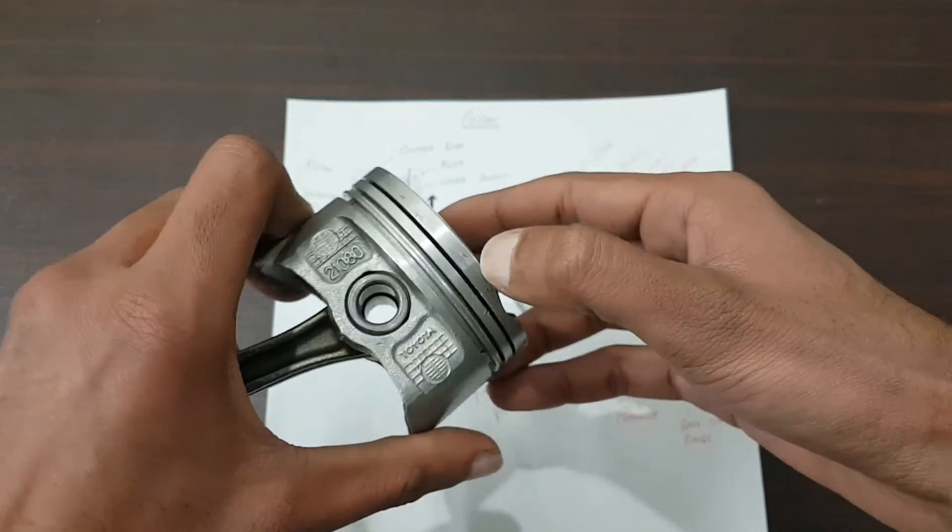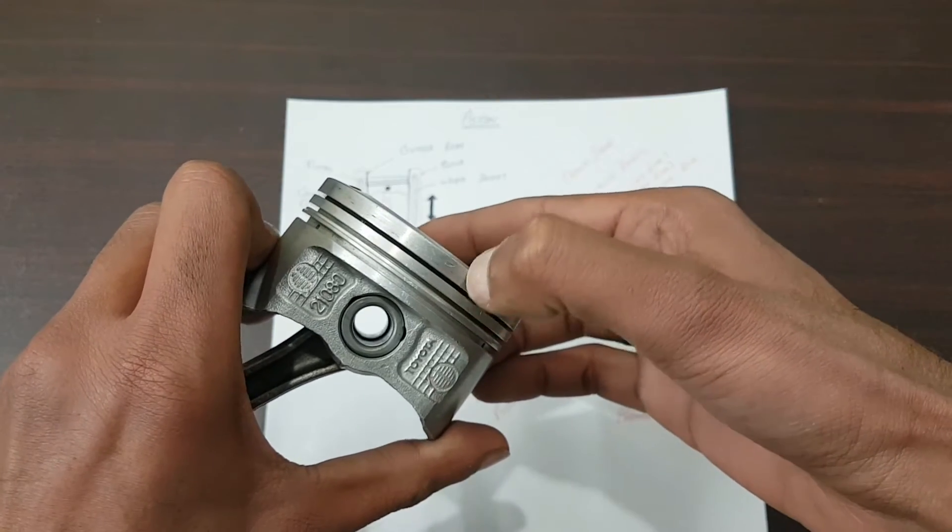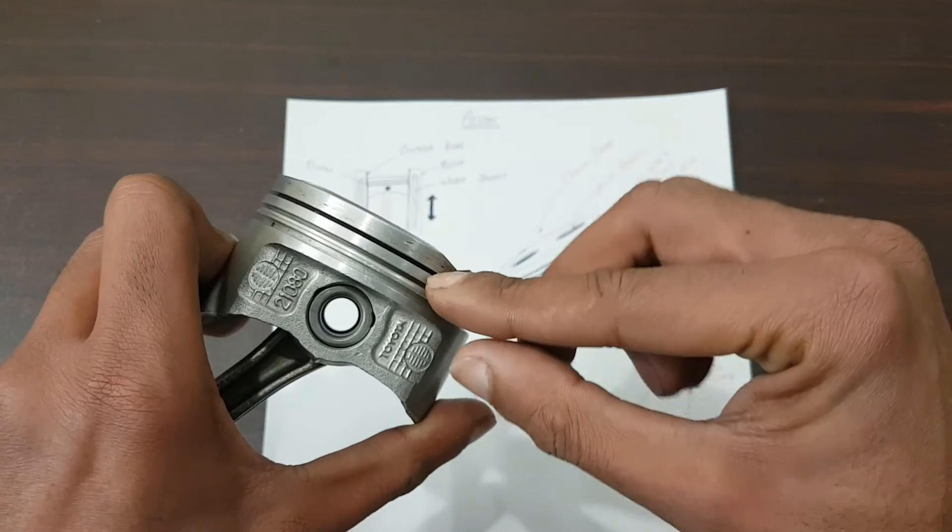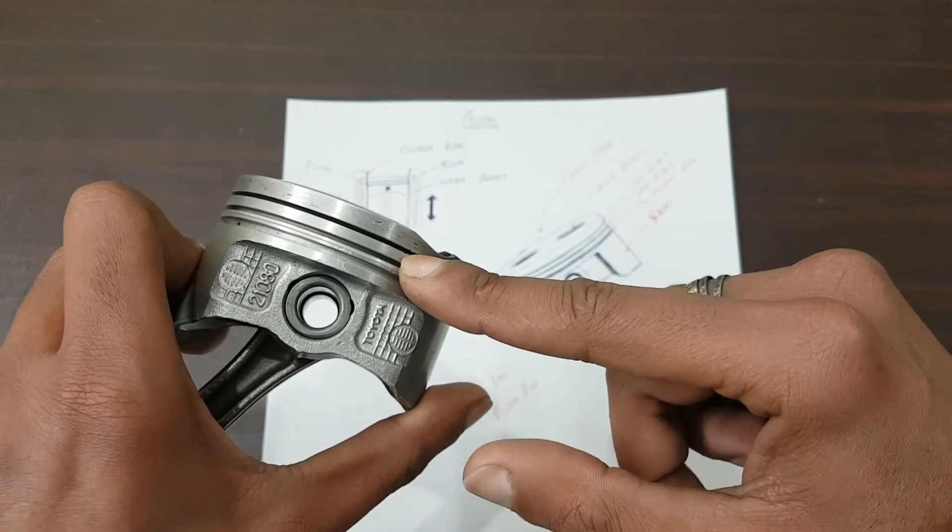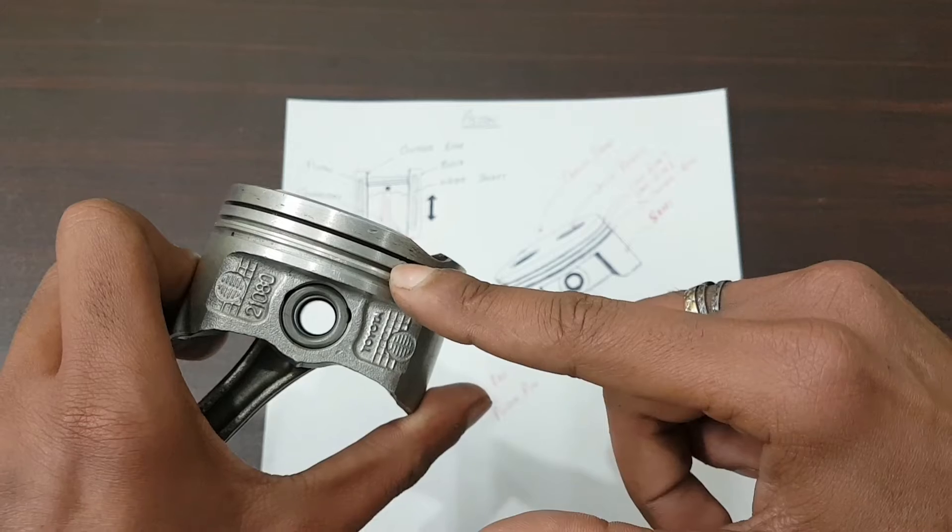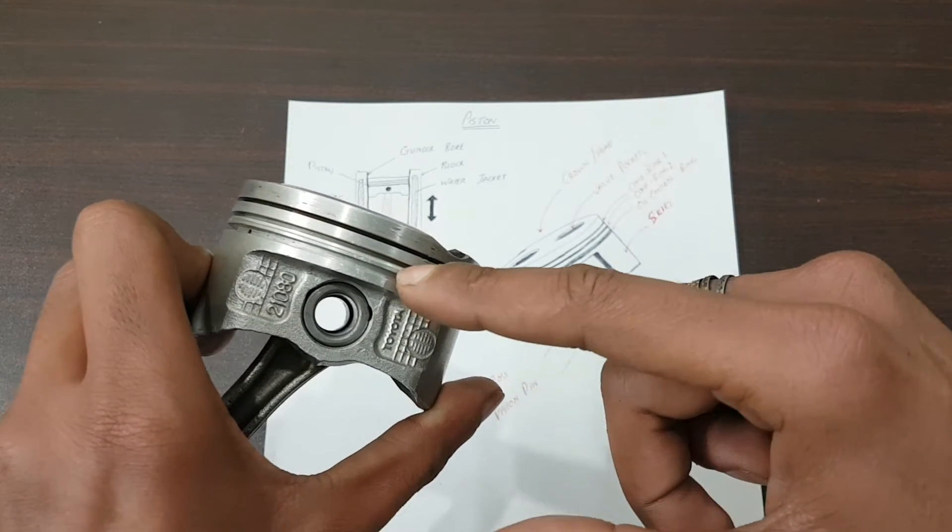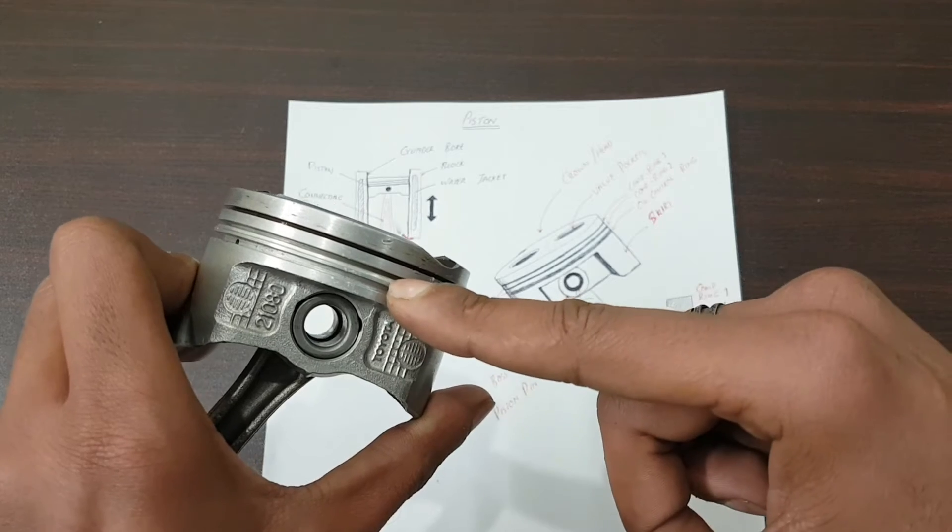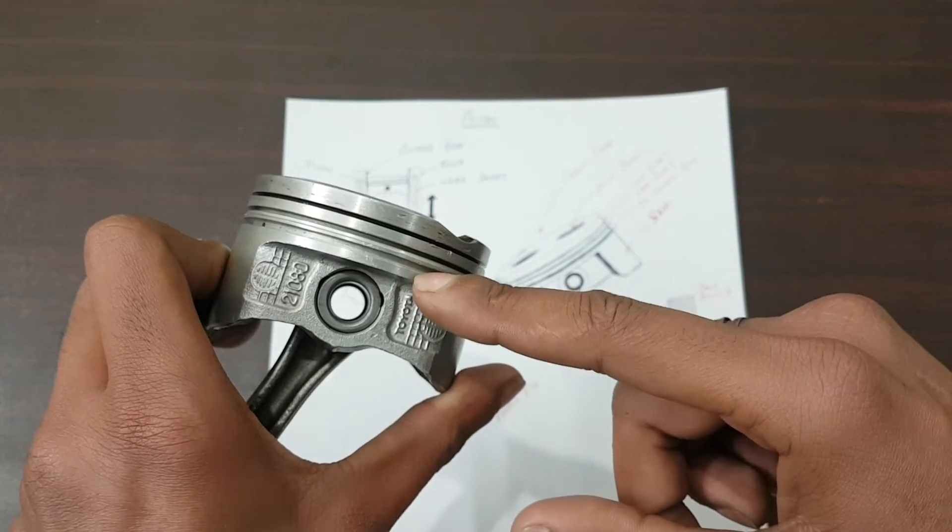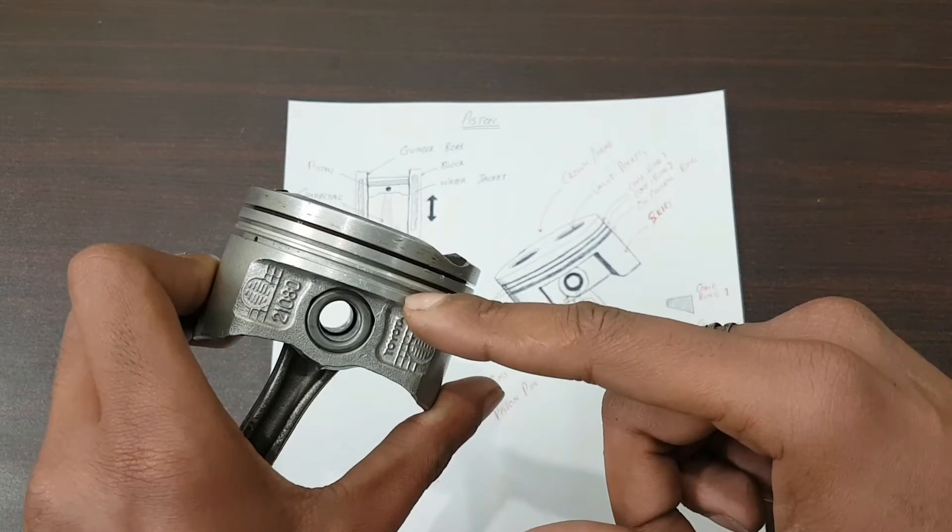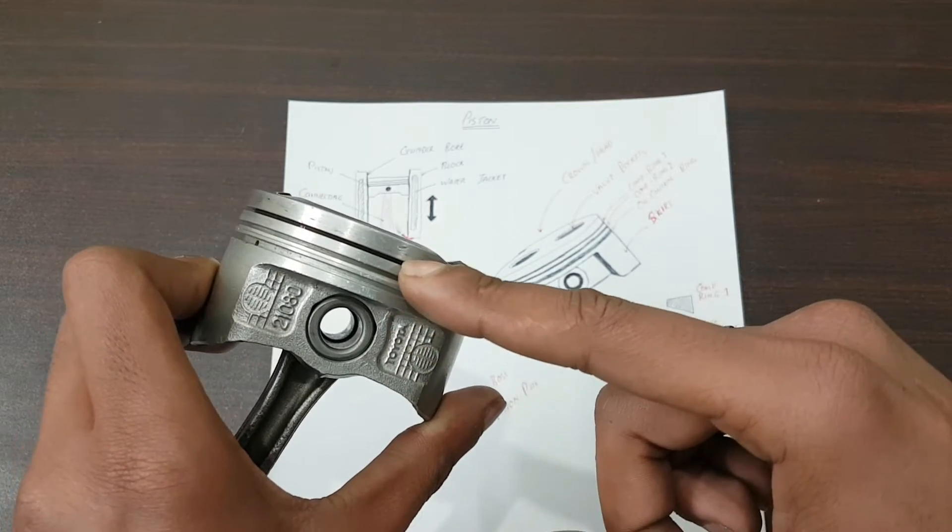Coming downwards, this region is generally known as the heat barrier. After the heat barrier, you will see compression ring groove number one. This area between two rings is known as ring land, and this one is for compression ring number two. After compression ring number two, you will find the oil ring groove, which is much bigger than the compression ring grooves.